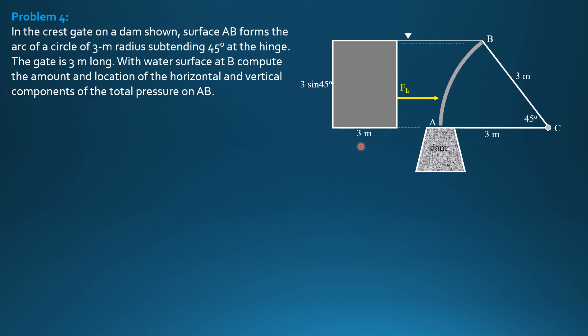So F_H, that's the location. It's below the centroid. And therefore, this is one third of 3 sine of 45. The height is 3 sine of 45, and it is level with the water surface. So we don't need to solve for E sub E. This is one third of 3 sine of 45, or 0.7071 meter.